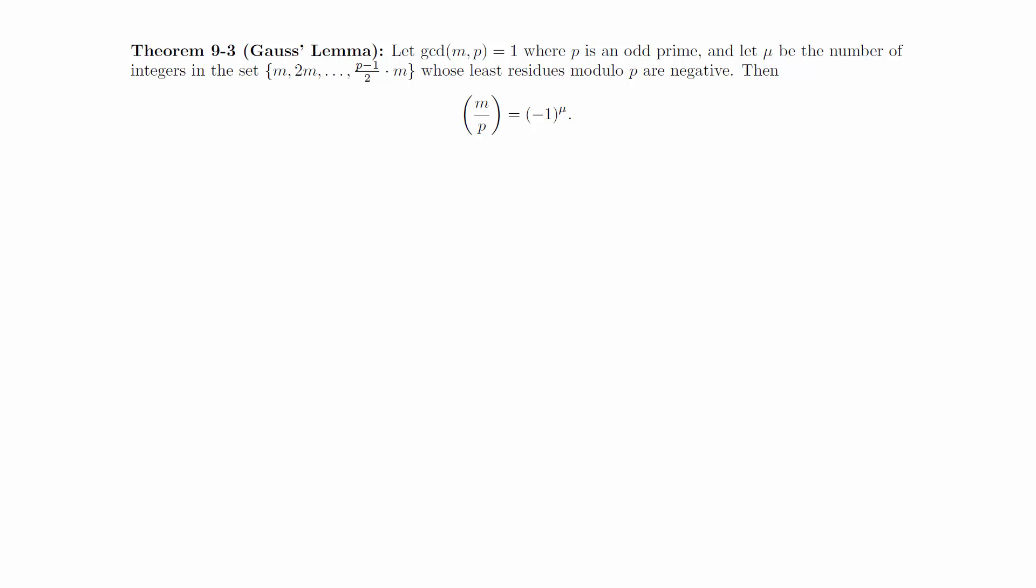The first observation we need to make is that all of the least residues in the list of multiples of m are different. Suppose that a times m is congruent to plus or minus b times m modulo p, where a and b are between 1 and (p-1)/2. Then, since the gcd of m and p is 1, we have that a is congruent to plus or minus b mod p. But since a and b are both positive and less than (p-1)/2, they must actually be equal.